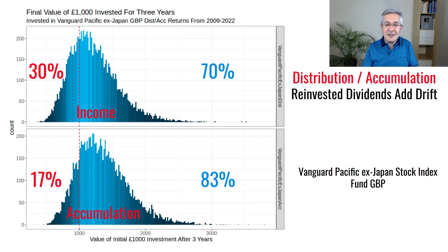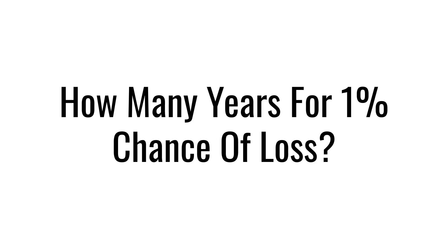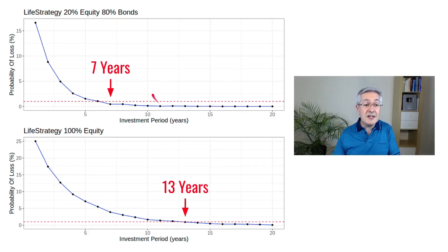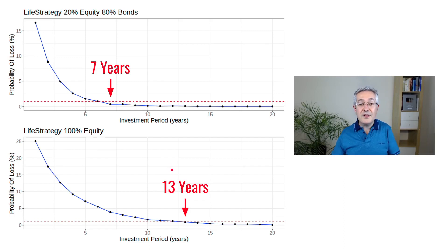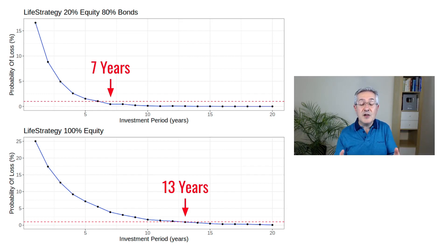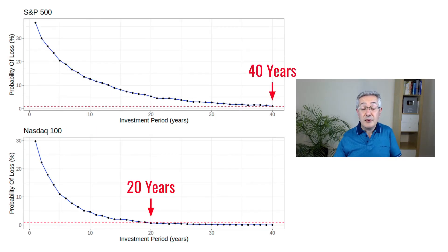Another way to think of it: if there is volatility, it now has to combat that income effect, which is always positive. We can also use this Monte Carlo approach to look at how many years we'd have to invest to reduce the chance of loss to just 1%. For Life Strategy 20, it would take seven years for that probability to fall below 1%, whereas for Life Strategy 100, which is much riskier, it would take almost twice as long. If you do want to guarantee a gain, you have to wait a very long time with equity because it's so volatile. For the S&P 500 and NASDAQ 100, the time periods are even longer, though these numbers are very sensitive to the period over which you base your simulation.